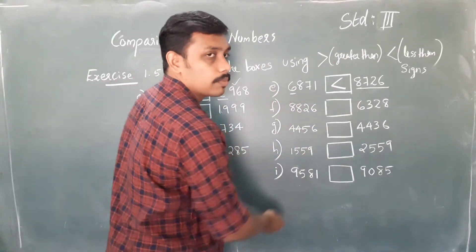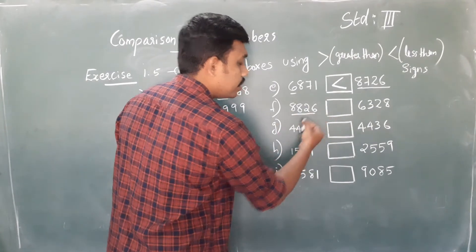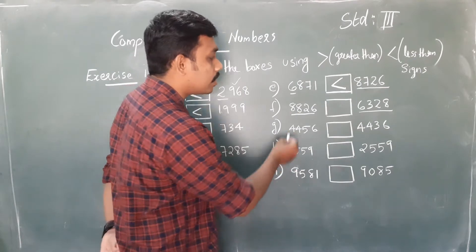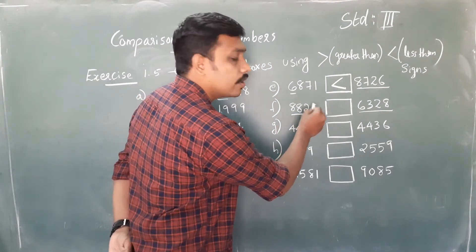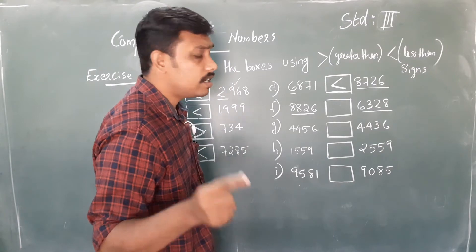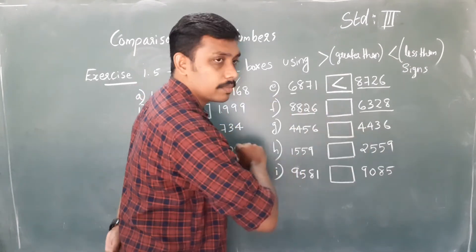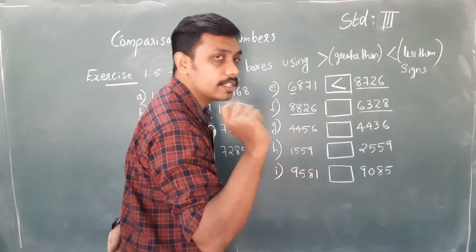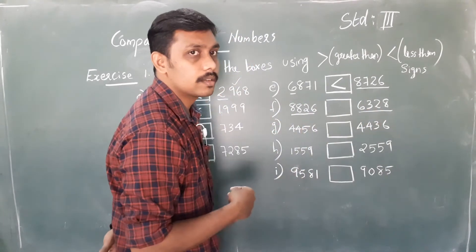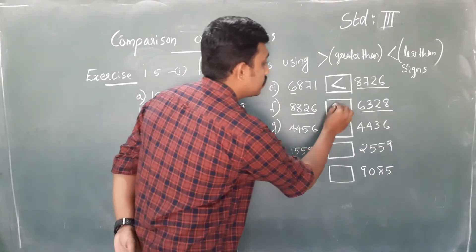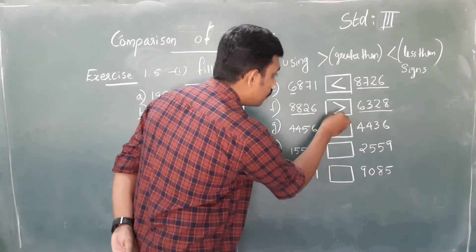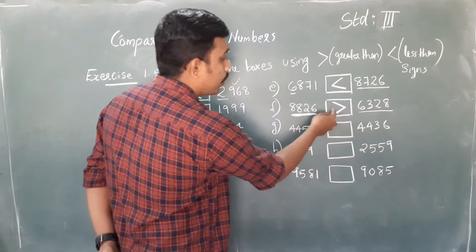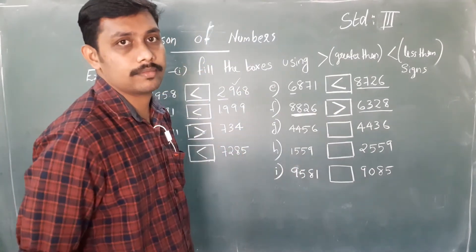Next problem: both are four-digit numbers. Read the number: 8826. Read the next number: 6328. The left extreme digits are 8 and 6, so 8826 is the larger number. We represent it with the open mouth to the larger number.